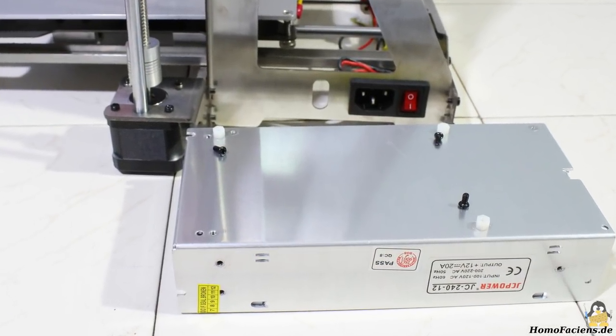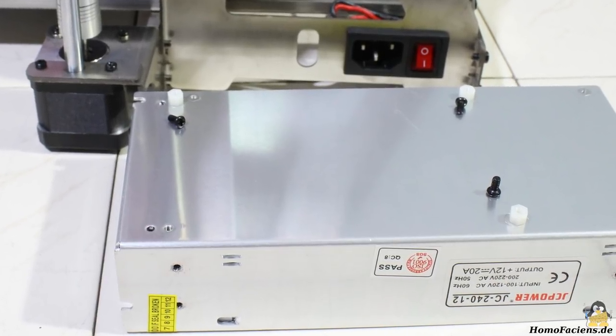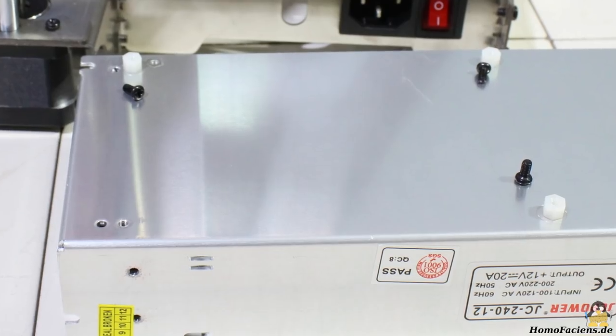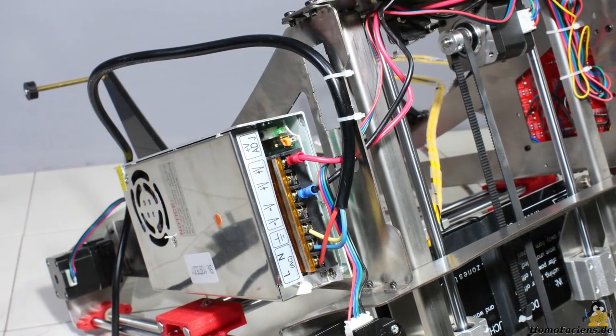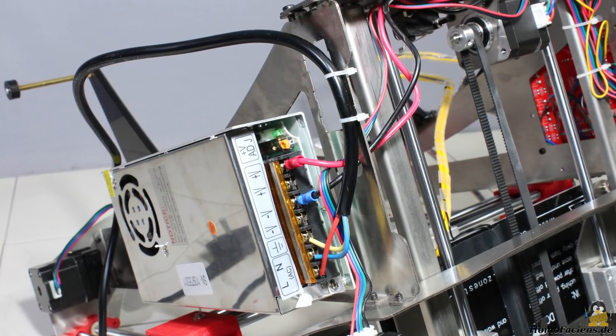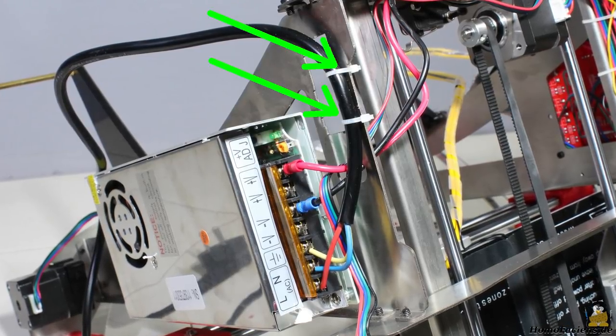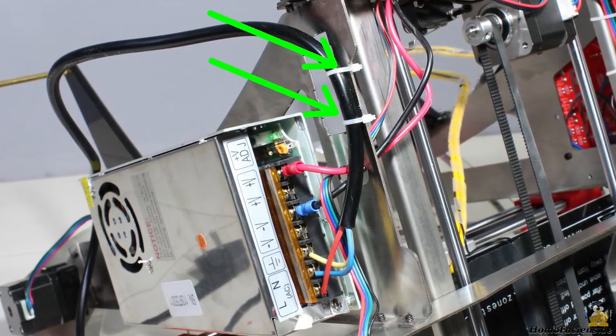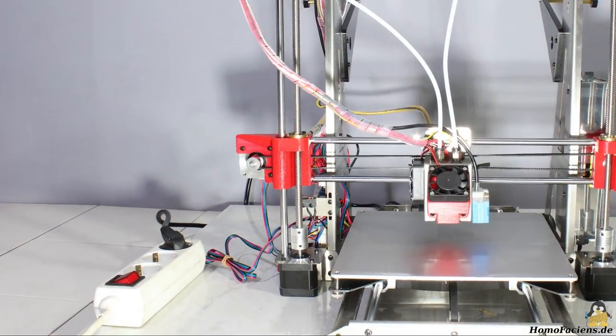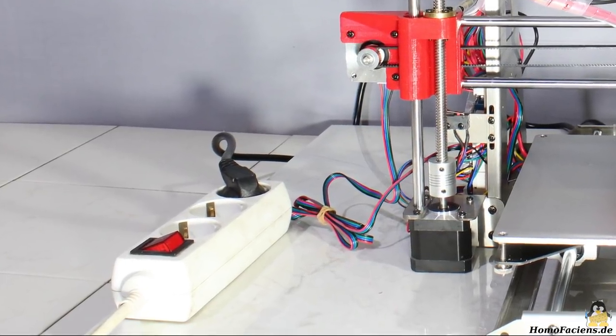Because the power supply is insulated from the metal frame by plastic spacers, the protective earth is without any effect when touching the metal frame during operation. Since the power switch is hard to reach, I have connected the mains cable directly to the terminals of the power supply. Don't forget to tighten the mains cable on the frame as well to have some sort of strain relief. I'm using a switchable socket outlet so I can turn off the printer quickly in case something goes wrong.